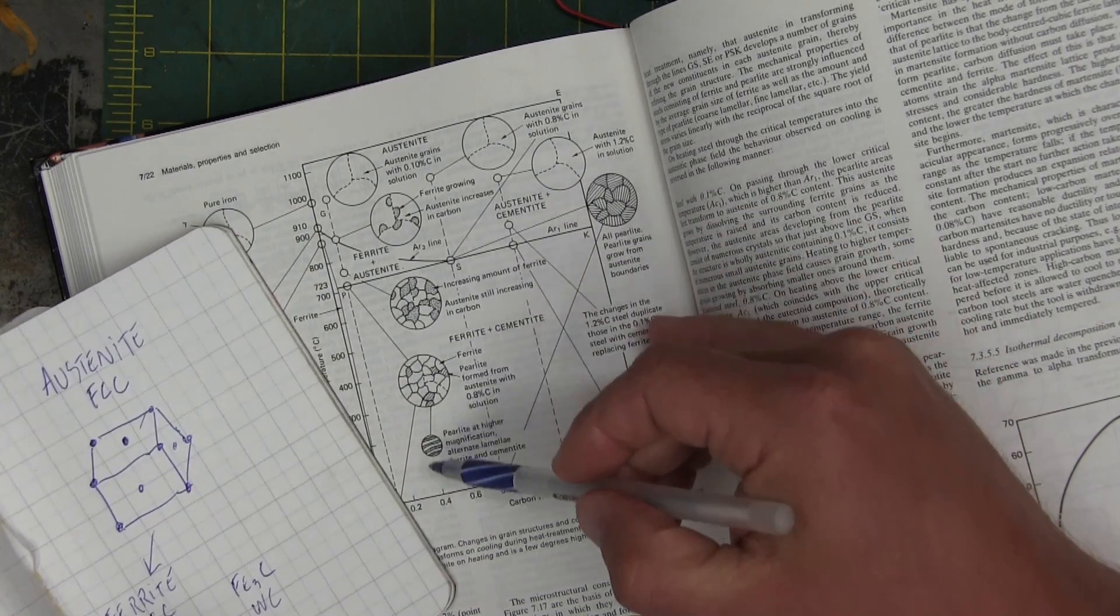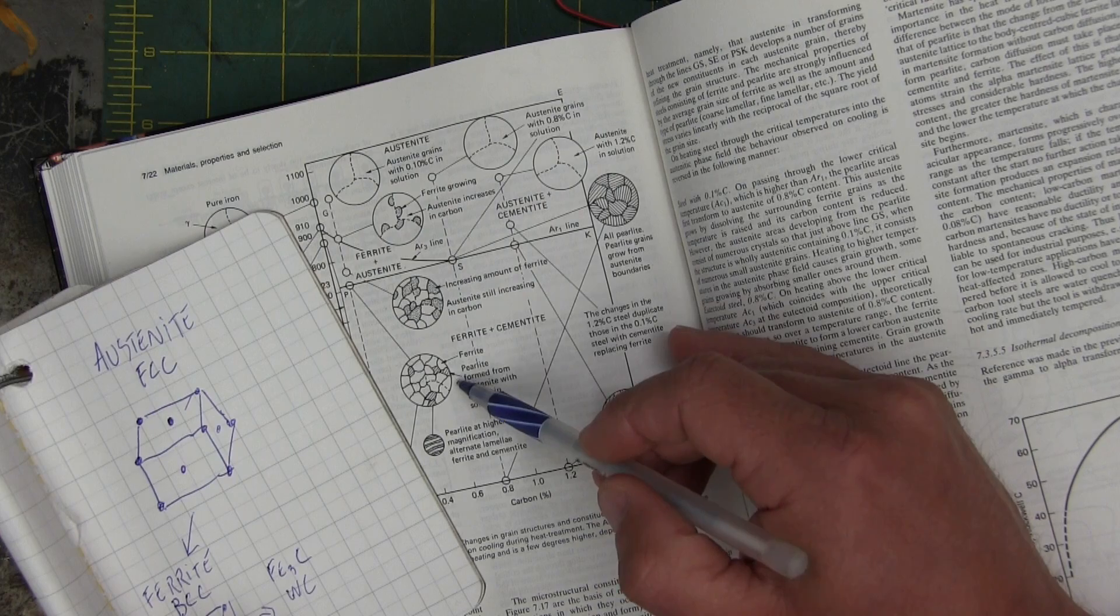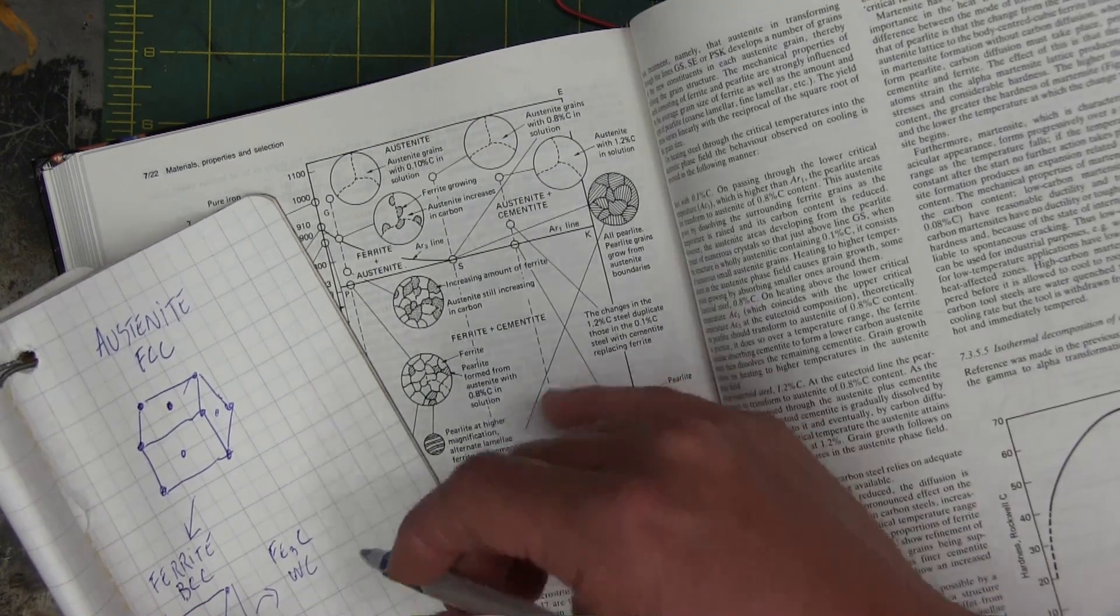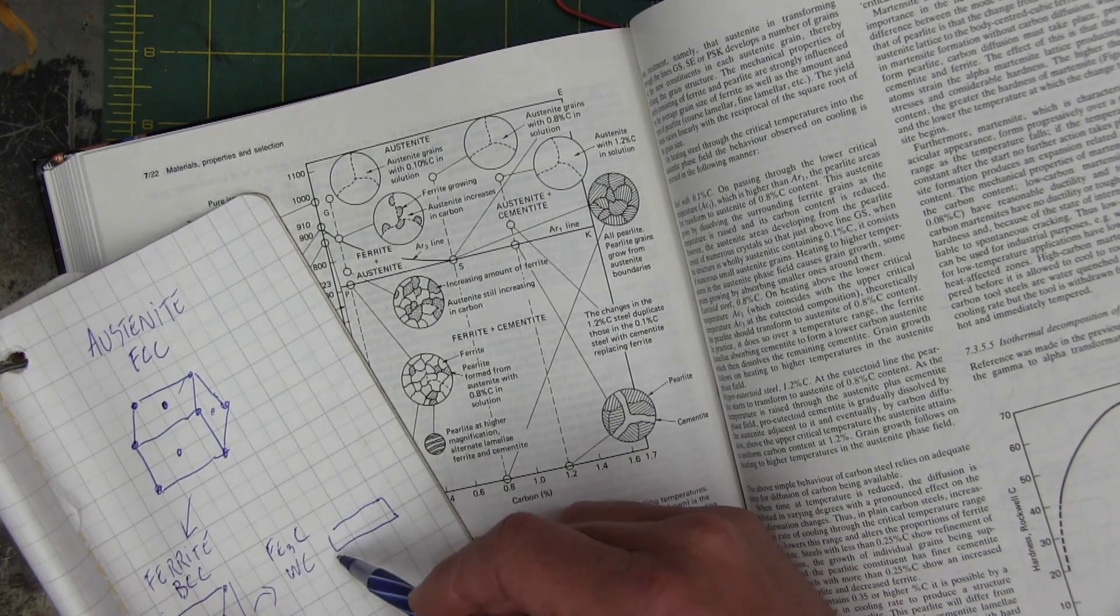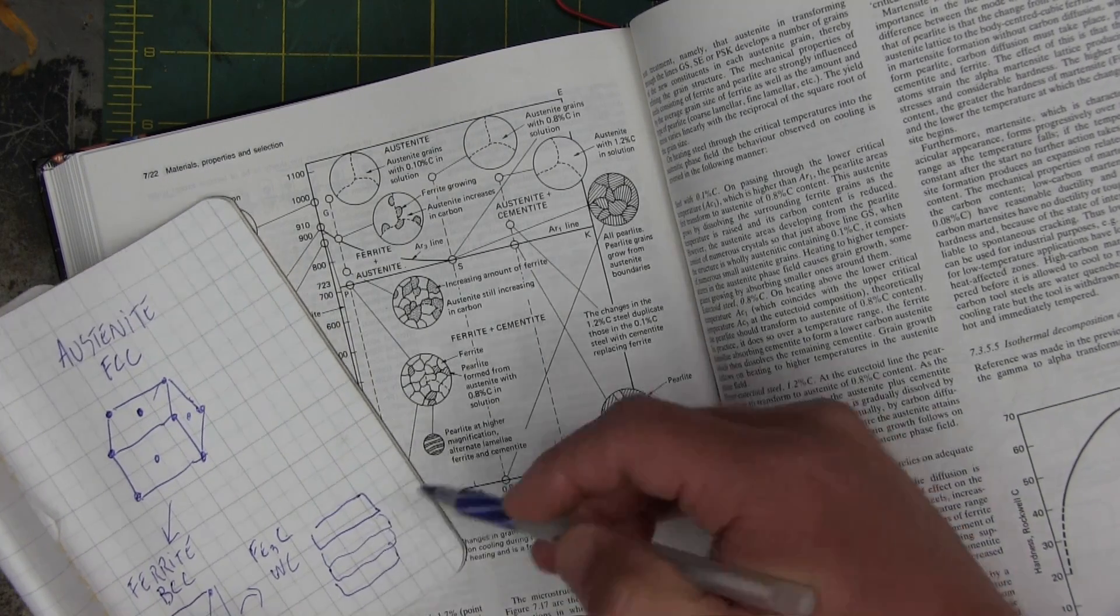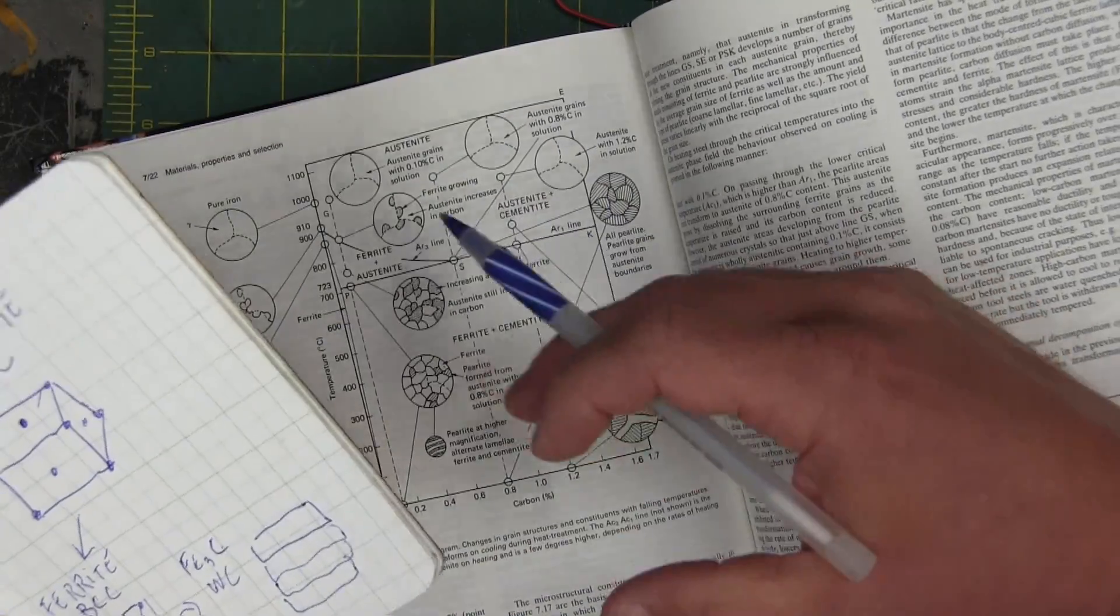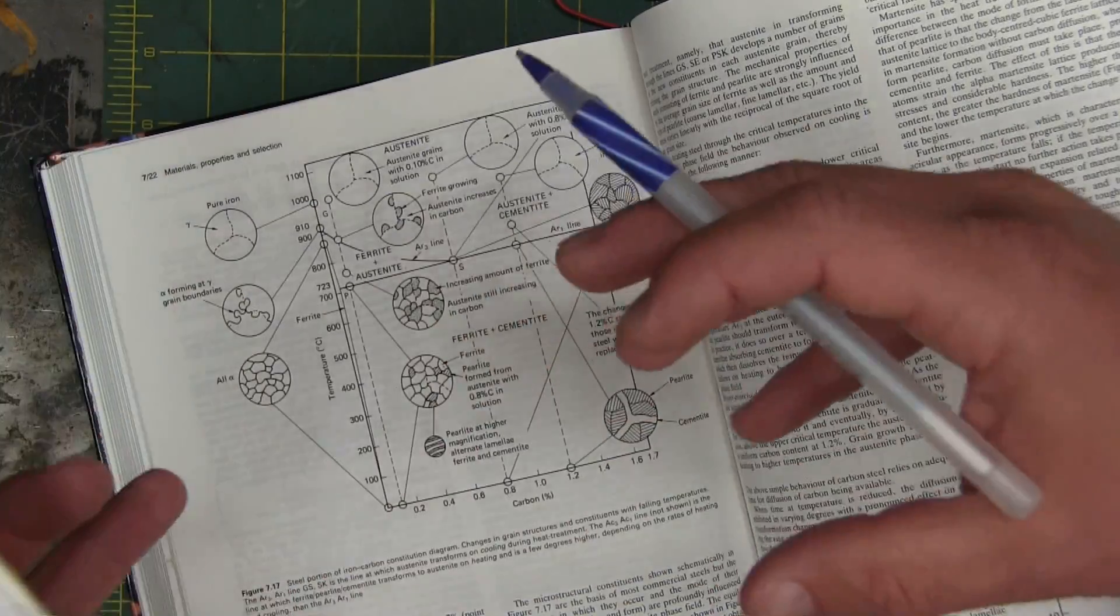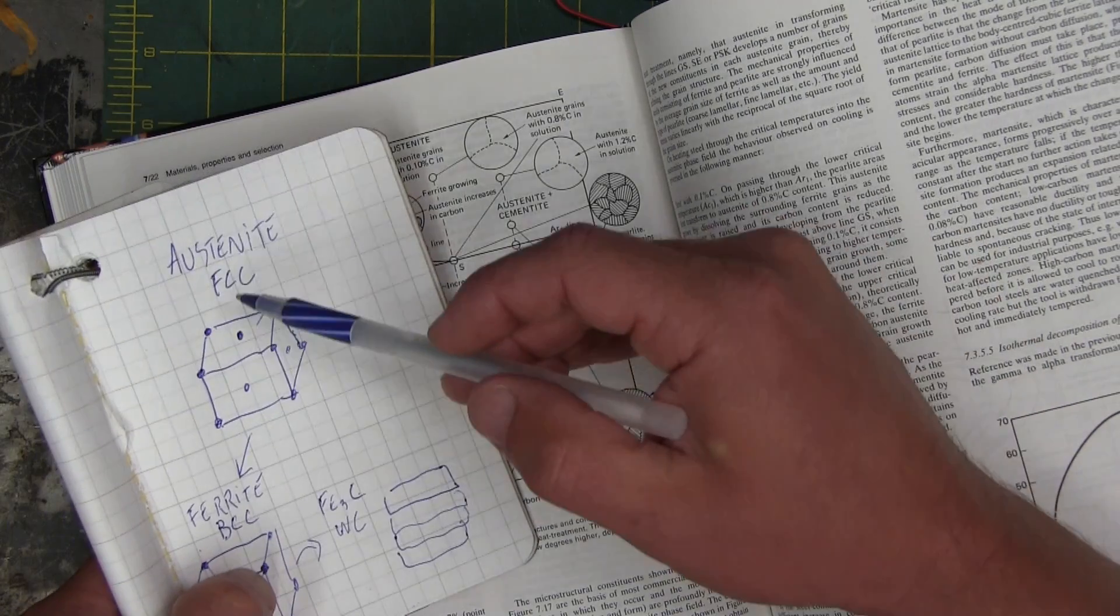As we come down in temperature, we start to grow grains of ferrite and also grains of perlite. And what perlite is, is laminar stacks of this cementite and ferrite. So what we get is different grains together, almost like an aggregate, like a stone. When you compact stone and clay, it bonds together real nice. That's what we're getting.